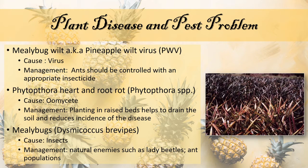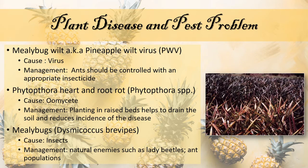The next disease is Phytophthora heart and root rot, which is caused by the Oomycete Phytophthora sp. The management for this is to plant and raise beds so that it helps to drain the soil and reduce incidence of the disease. Mulch from pineapple debris should be avoided, and pre-planting dips and foliar applications of Fosetyl Aluminium are very effective at controlling the disease. The last pest problem is mealy bugs, which are insects known as Dysmicoccus brevipes. Mealy bugs can potentially be controlled by natural enemies such as lady beetles, and ant populations which tend the mealy bugs should be treated with an appropriate amount of insecticide.